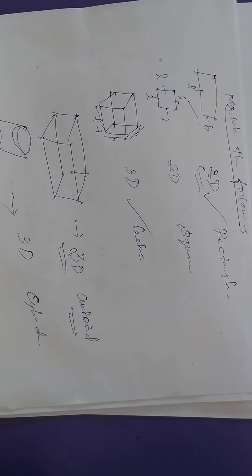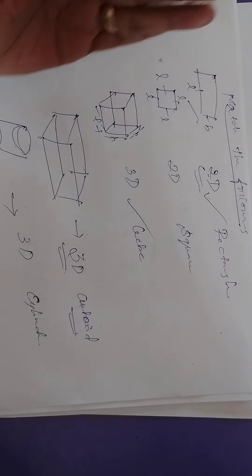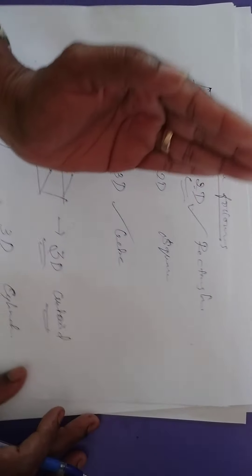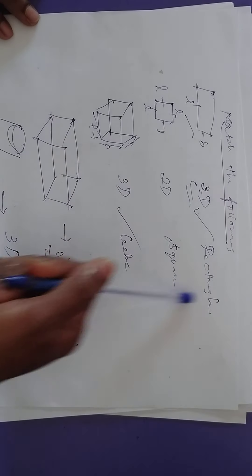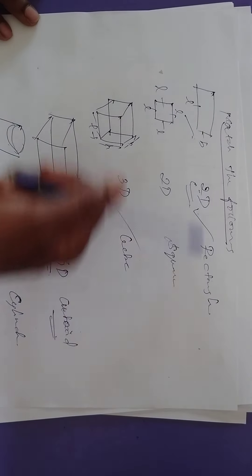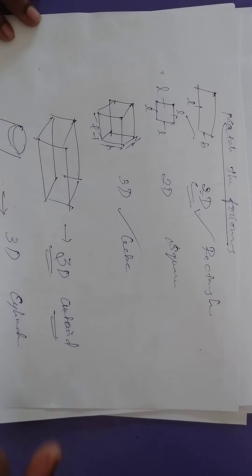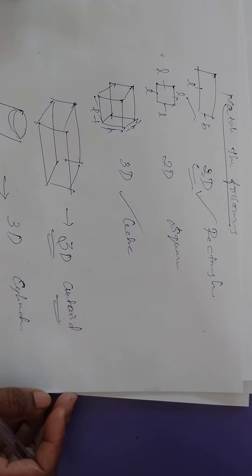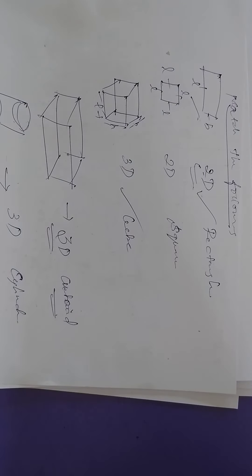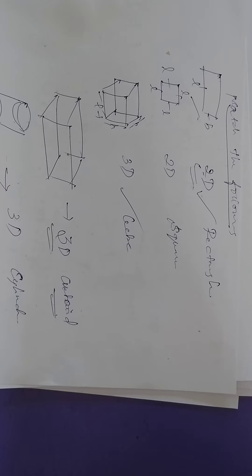For the 4-mark question, I will give the diagram and you have to identify whether it is 2D or 3D and the name of the solid, and write direct answers. I have briefly discussed the question paper. All the sums and questions we have done in class — please go through your textbook. All the best for your exam. Do well. Thank you, children.